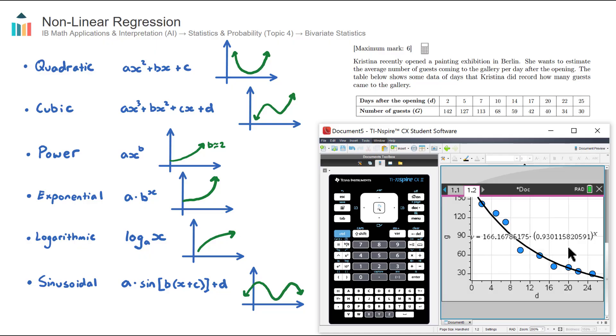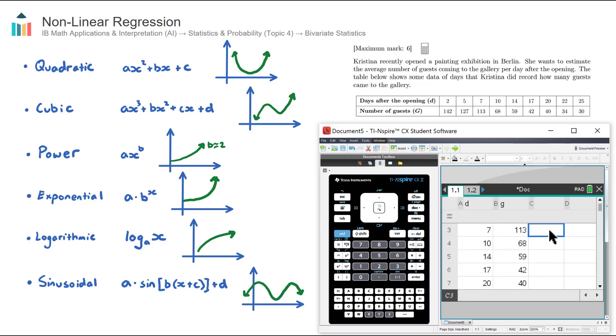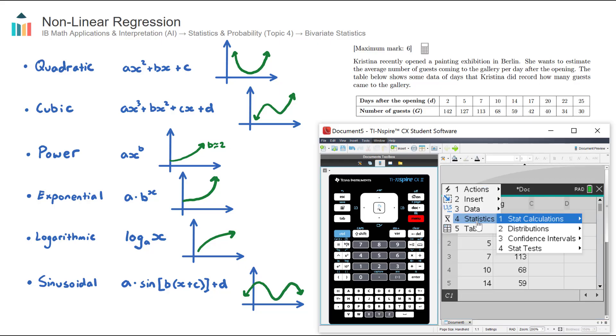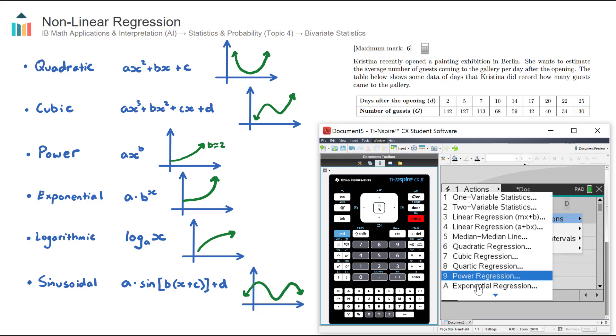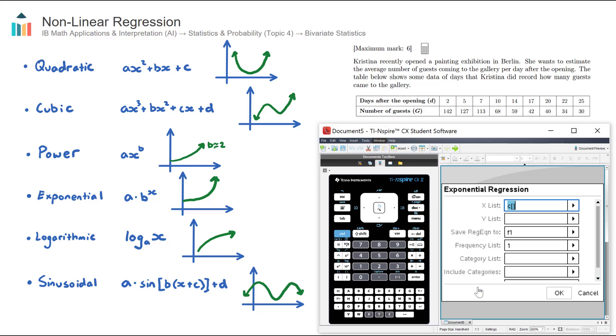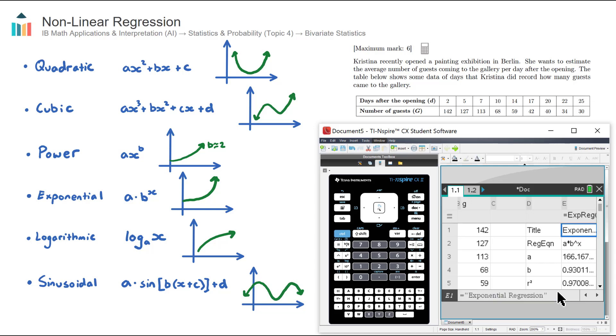Now, the way that we compare which models we should use is by comparing the R squared value, the coefficient of determination. Now, if you're not sure what that is, I recommend watching the key concept video on that topic, the coefficient of determination. But the way that we find that R squared value is to go back to the statistics page. Let's go up to the top of the next column, column C, and we can go menu, number four, statistics, number one, stat calculations. And I'm going to choose A, exponential regression. The x1 list is our independent variable D. The y1 list is our dependent variable G. Hit OK. And we get our R squared value there.